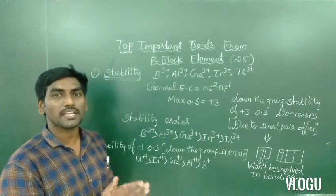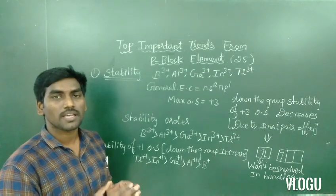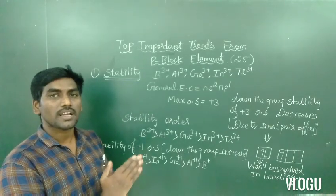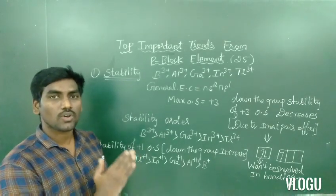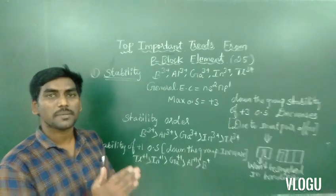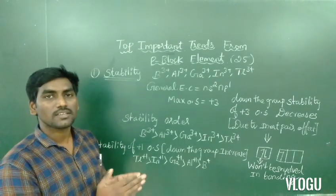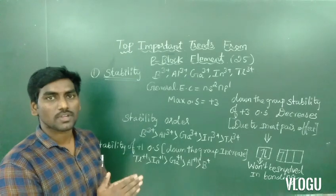So in this video, we will talk about the top 25 important trends. In this periodic table, the first time is the boron group. So here is the arrangement.